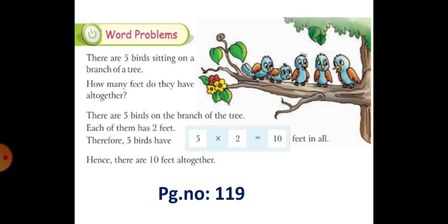Now find how many feet in all. Just 5 birds have, so 5 into 2 is equal to 10 feet. So totally there are 10 feet altogether.